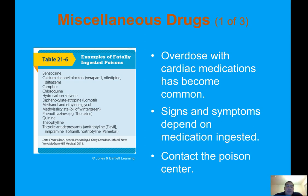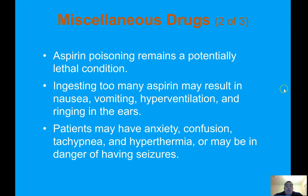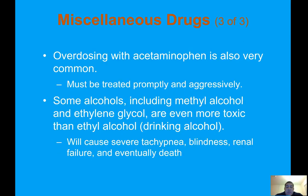Overdose with cardiac medications has become common; signs and symptoms depend on the medication ingested — contact the poison center. Aspirin poisoning remains a potentially lethal condition; ingesting too many aspirin may result in nausea, vomiting, hypertension, and ringing in the ears. Patients may have anxiety, confusion, tachypnea, and hyperthermia, or may be at risk for seizures. Overdose with acetaminophen is also very common and must be treated promptly and aggressively. Some alcohols including methyl alcohol and ethylene glycol are more toxic than ethyl alcohol and can cause severe tachypnea, blindness, renal failure, and eventual death.